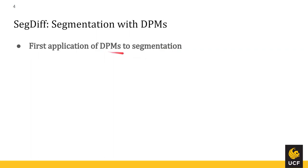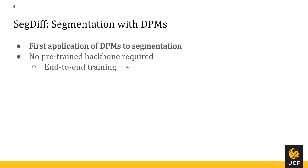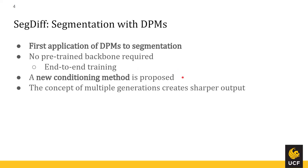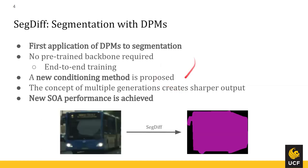This is the first application of diffusion probabilistic models to segmentation. In this paper, they end up with a model that doesn't need any pre-trained backbone, and they have end-to-end training all within the diffusion model. They propose a new conditioning method, and they talk about using multiple generations from their diffusion model to create sharper outputs. They claim new state-of-the-art performance in their test suite. Here's an example of the segmentation task on an image of a bus, and we get a pretty sharp output.